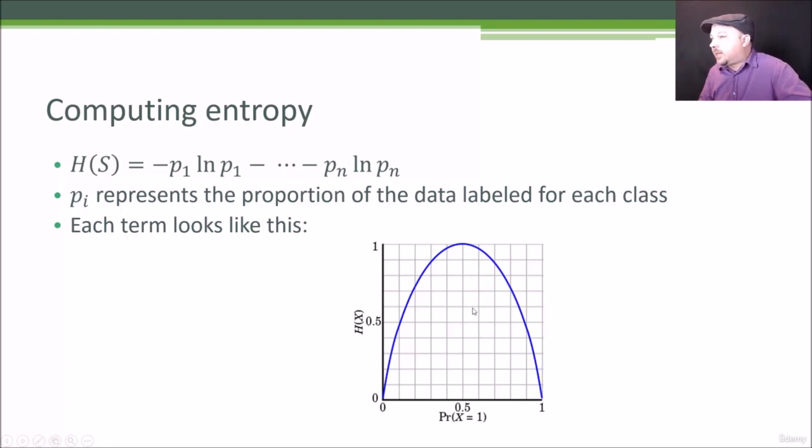If you look at it, it kind of makes sense. For example, if the proportion of the data that is a given class is zero, then the contribution to the overall entropy is zero. And if everything is that class, then again, the contribution to entropy is zero. In either case, if nothing is this class or everything is this class, that's not contributing anything to the overall entropy.